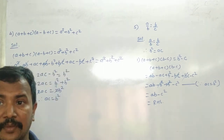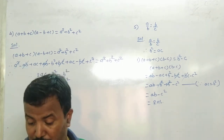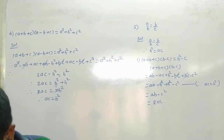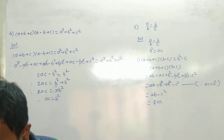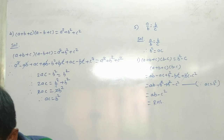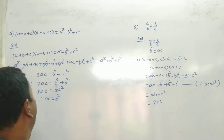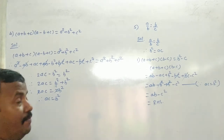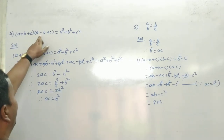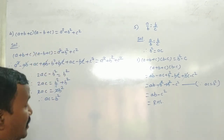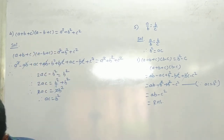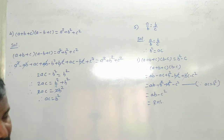Okay, now question number 4 में देखो — question number 4 में क्या बता है? If (A + B + C)(A - B + C) is equal to A square plus B square plus C square, then show that A, B, C are in continued proportion.